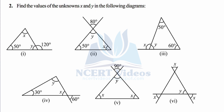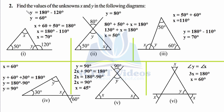Question two: find the values of the unknowns x and y in the following diagrams. In this case we have to find two variables, x and y, using the same property that all three internal angles of a triangle add up to 180 degrees.